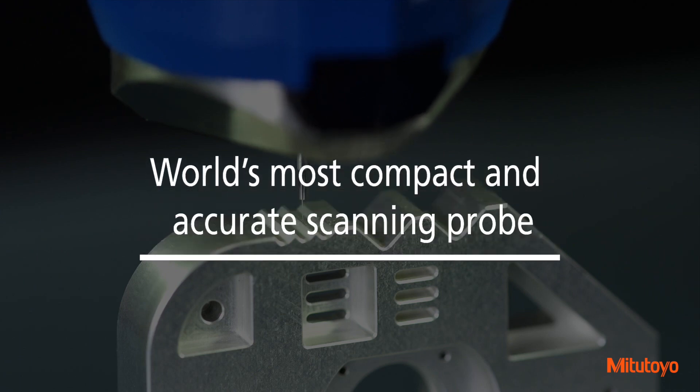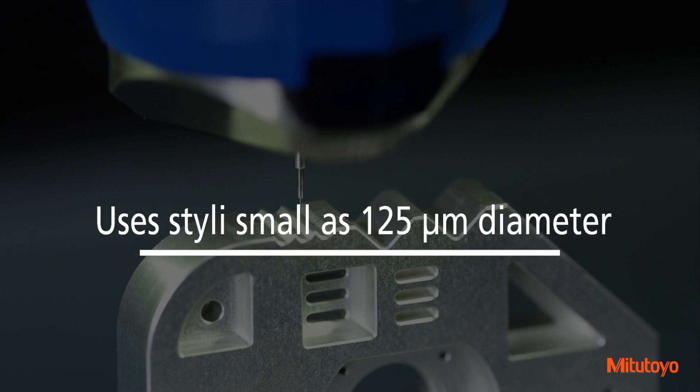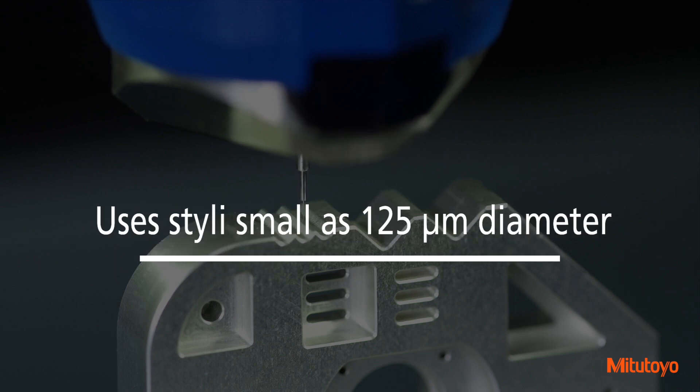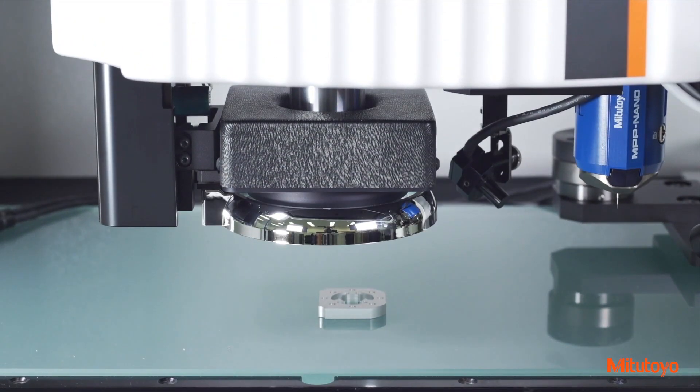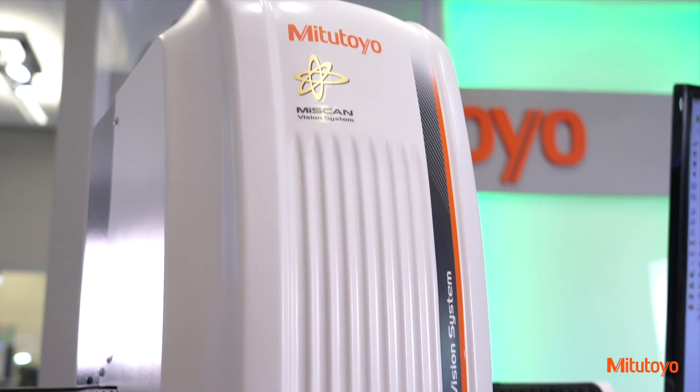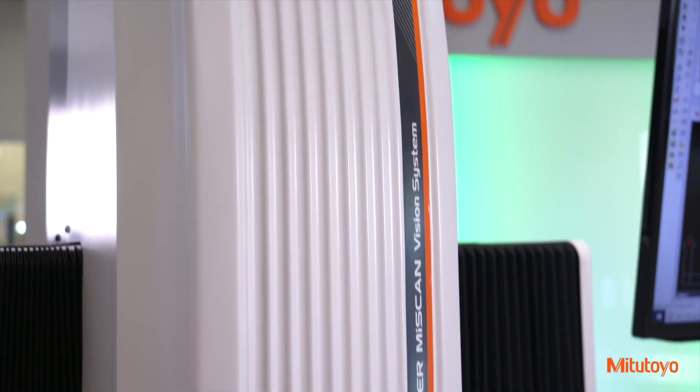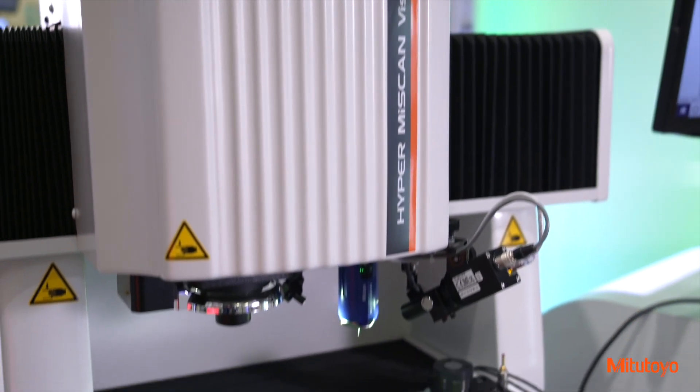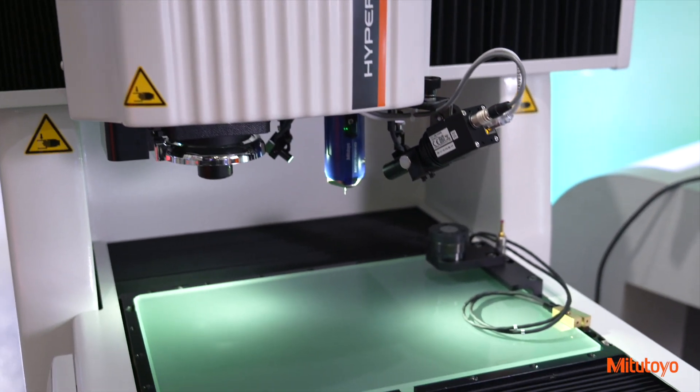The MPP Nanoprobe is the world's most compact and accurate scanning probe, and it can use styli as small as 125 micrometer diameter. An observation camera makes measurement setup easy. The SP25M scanning probe is also supported to measure small and large-sized workpieces and features.